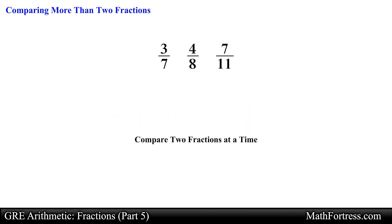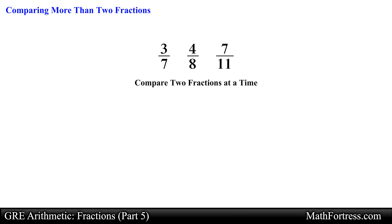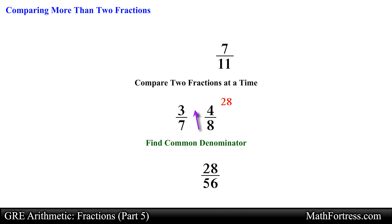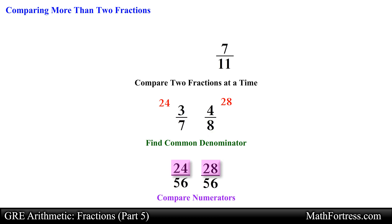Say we wanted to know which of these three fractions is the largest. We can start by comparing the first two fractions. Before we compare them we first need to rewrite them so that both fractions have a common denominator. The easiest way to do this is by multiplying the denominator of one fraction with the numerator of the other fraction. In this case we find the product of 7 and 4 which equals 28 — this becomes the new numerator of the second fraction. We find the product of 8 and 3 which equals 24, the numerator of the first fraction. By observation, the second fraction is larger since 28 is greater than 24.